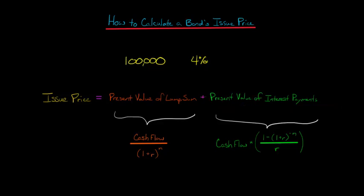So I've put here the formulas that we would use to calculate, for example, the present value of the lump sum payment. So in this case, it would be the $100,000. That would be the cash flow. You divide that by one plus the market rate of interest, and n is the number of periods.